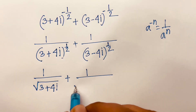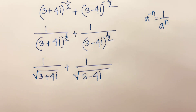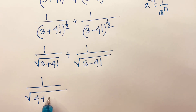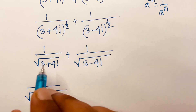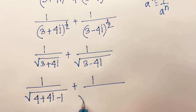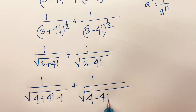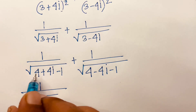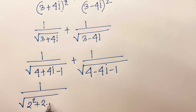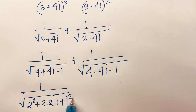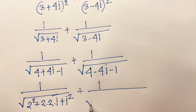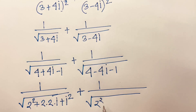This equation becomes one over square root of (4 + 4i - 1). Now 4 minus 1 equals 3, and again one over square root of (4 - 4i - 1). That gives one over square root of (2² + 2·2·i + i²), and since i² = -1, plus one over square root of (2² - 2·2·i + i²).